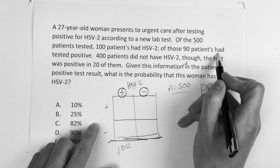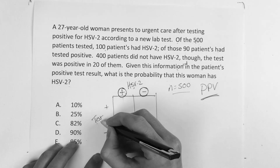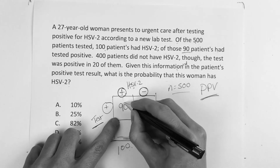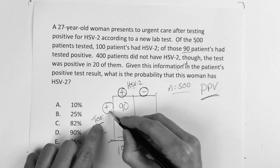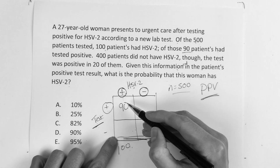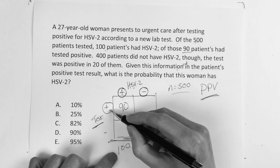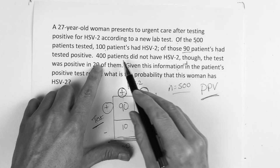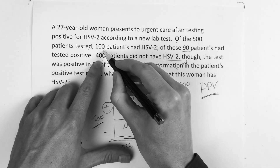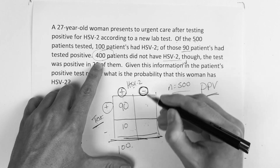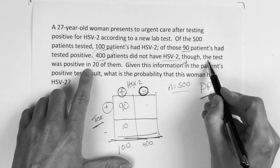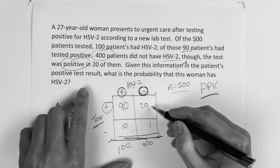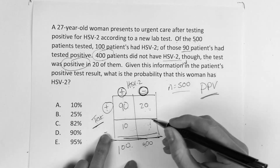Of those 100 who had HSV-2, 90 had a positive test. So let's put test over to the side. 90 of those 100 had a positive test. They don't come out and say how many had a negative test, but if everybody in this column is 100 and 90 had a positive test, that means there must be 10 who actually had HSV-2 but tested negative. Now it goes on to say 400 patients did not have HSV-2 — that 400 represents the people who did not have HSV-2. Though the test was positive in 20 of them, so 20 goes in the positive test row for the disease-negative column. If 20 had a positive test, then 380 had a negative test.